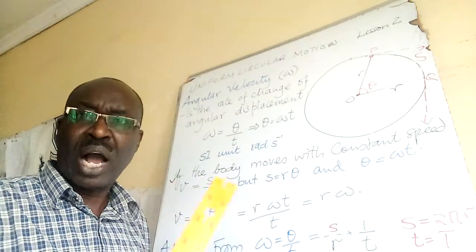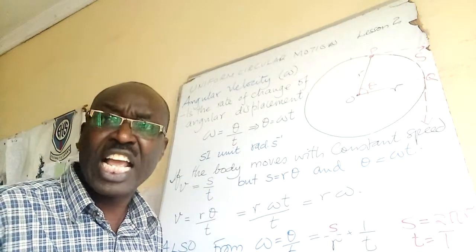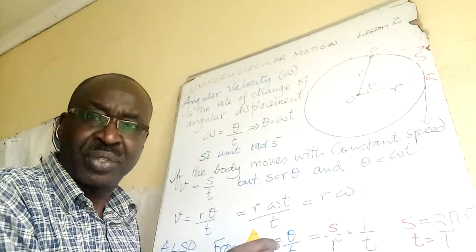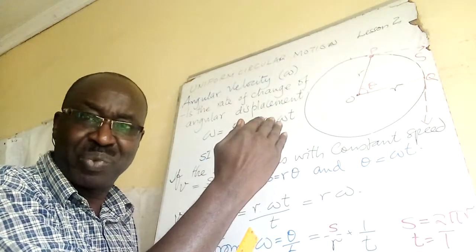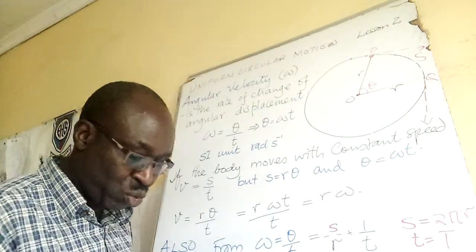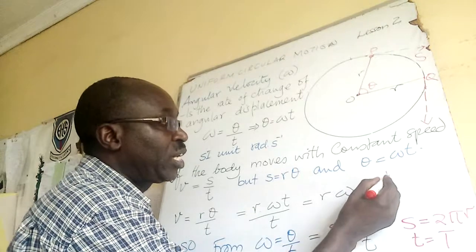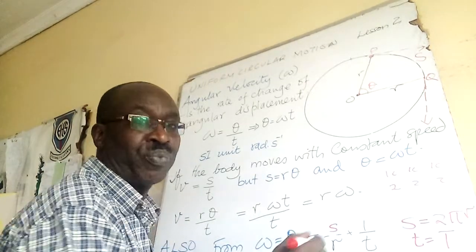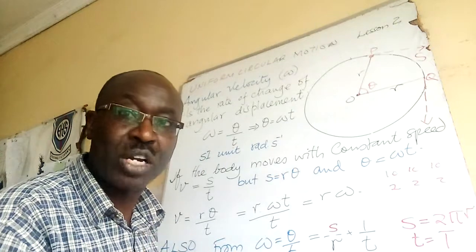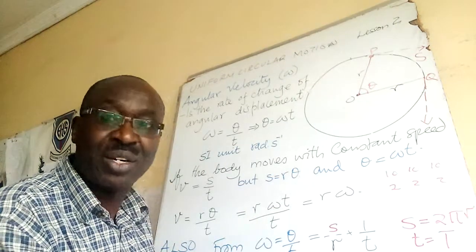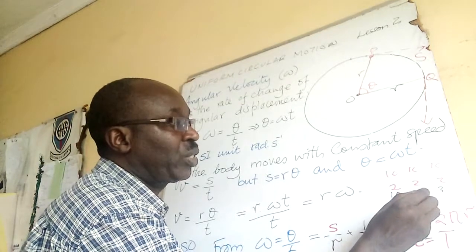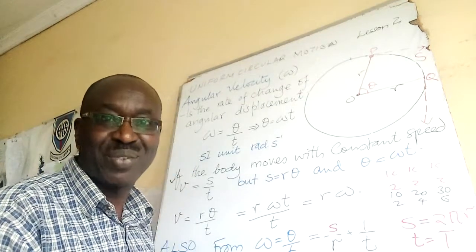Constant speed means a body moves equal distances in equal time intervals. For example, if it covers 10 units in 2 seconds, then the next 10 units also takes 2 seconds. When you tabulate this, you don't write 10, 2 repeatedly — instead you write cumulative values: 10 at time 2, then 20 at time 4, then 30 at time 6. That is what equal distance in equal time interval means.